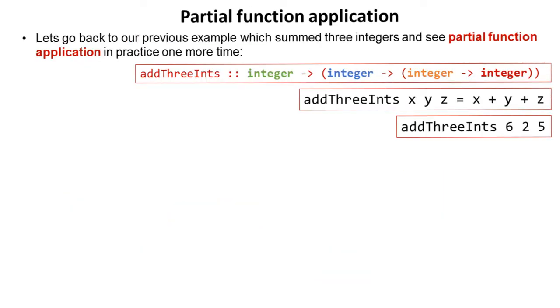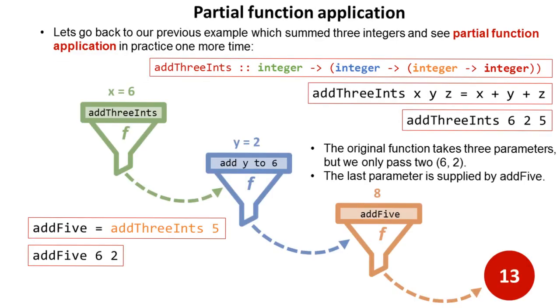Okay, so let's just go back to our previous example, the one where we were summing up three integers, and let's just have a look at partial function application in practice one more time to understand this. We're going to partially apply to addThreeInts and just apply it the first value only, where this partial function application is going to be part of a new function called addFive.